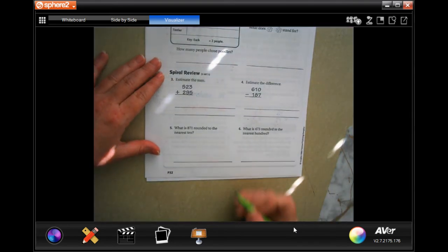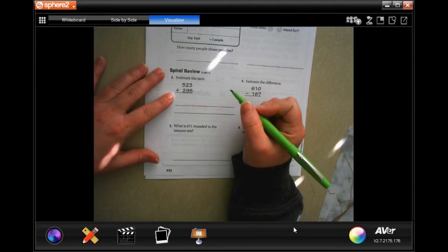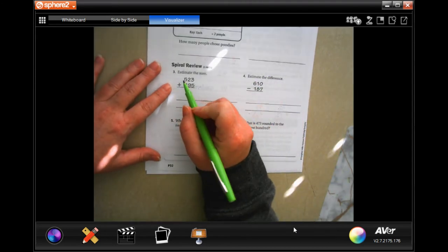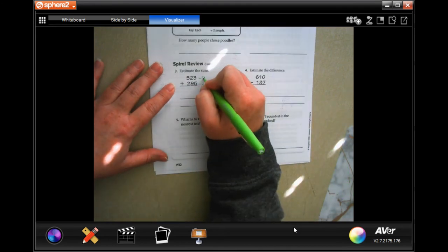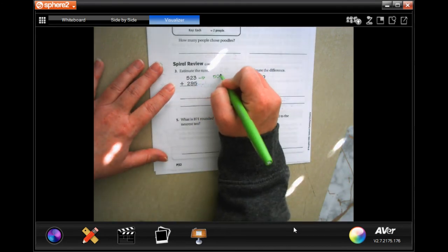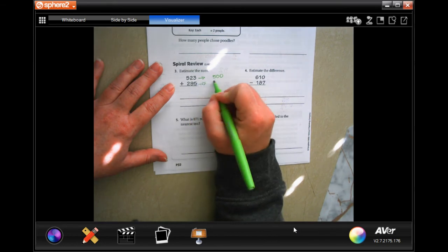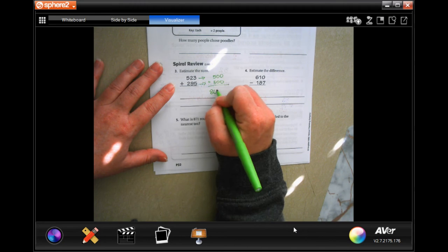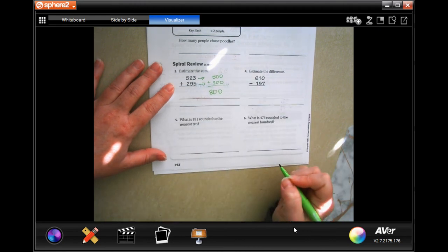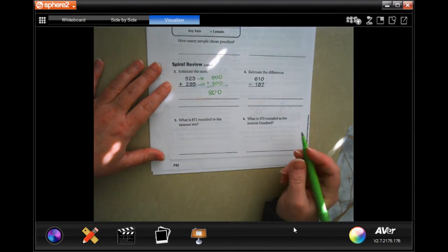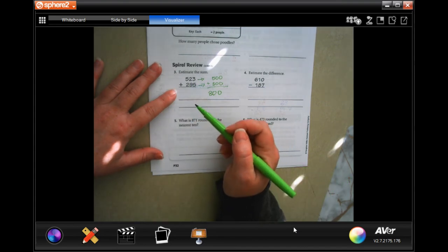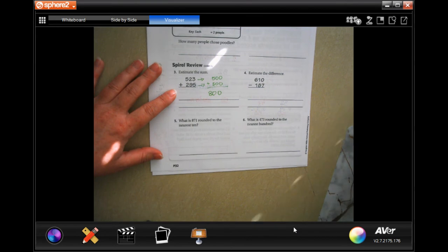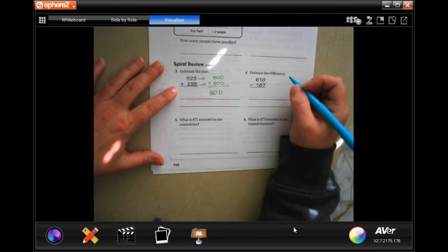All right, we are going to come down and we're going to estimate the sum. Well, five hundred and twenty-three would round to about five hundred, and two hundred and ninety-five would round to about three hundred, and we're going to add those together for eight hundred. Can you round that to five hundred and twenty-five? You sure can.